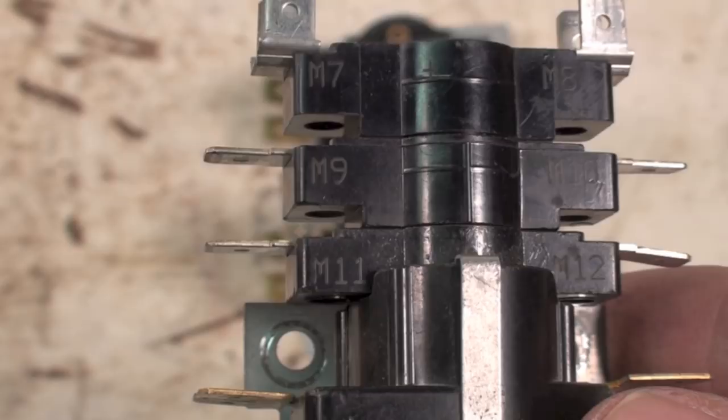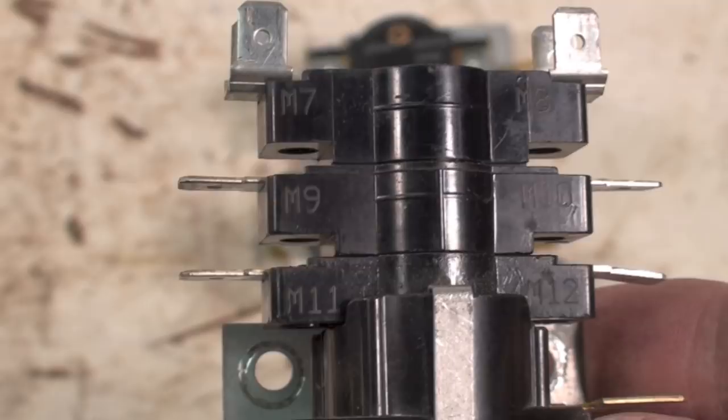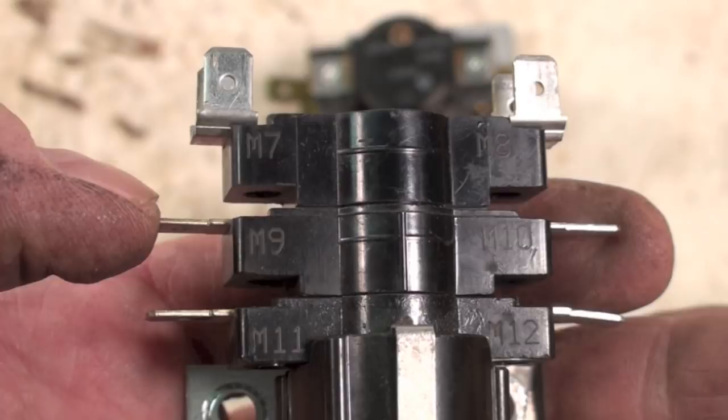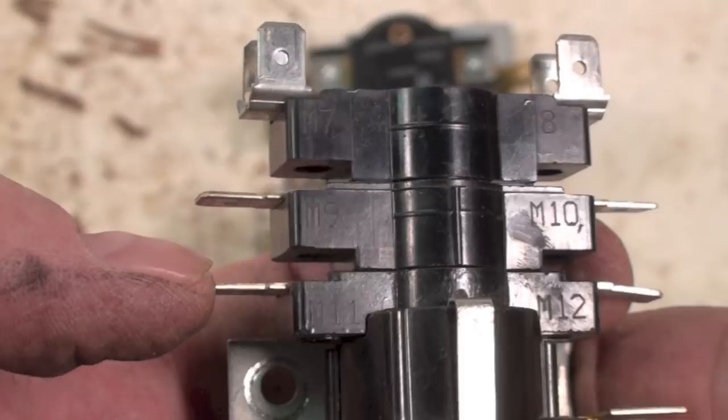This sequencer here, specifically, this one would be timed later because the higher the number on the M, the longer it takes for it to go on and the sooner it takes to shut off. Let me explain it a little better. This M9 and M10 are not going to come on when M7 and M8 come on. They're going to come on at a later time, and then 11 and 12 are going to come on later yet.